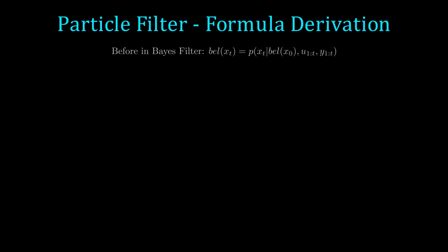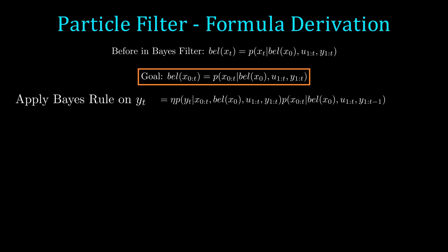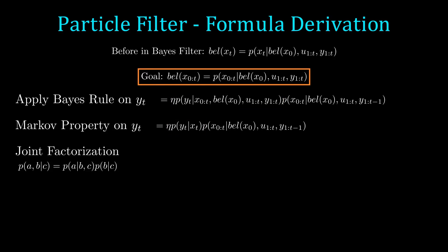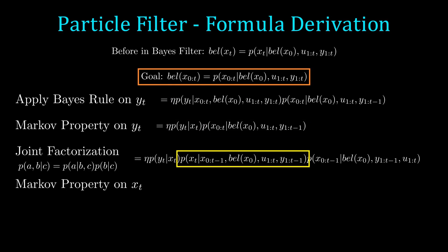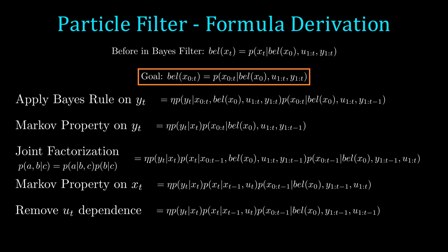We need to slightly re-derive the Bayes filter. We want each particle to represent the entire trajectory rather than our current time step. The derivation is extremely similar to the original Bayes filter, so it'll go a little bit faster. We first apply Bayes' rule on y of t and add a normalization factor. Then we simply use the Markov property. We can then apply a joint factorization and then clean up using the Markov property and remove unnecessary dependencies.